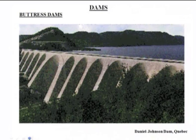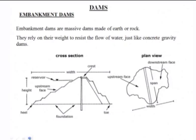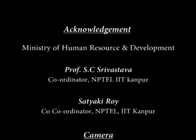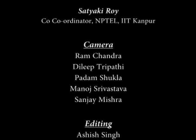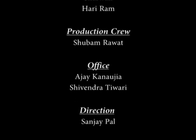Examples of buttress dams include one in Quebec and one in Colorado. The upstream side and downstream side are visible in the photographs. We will start with the embankment type of dam in the next class. Thank you very much.